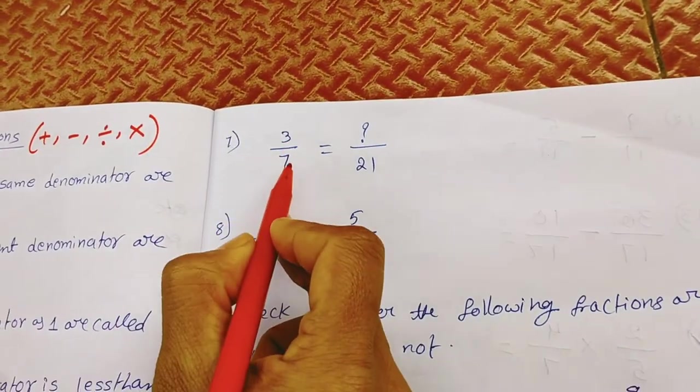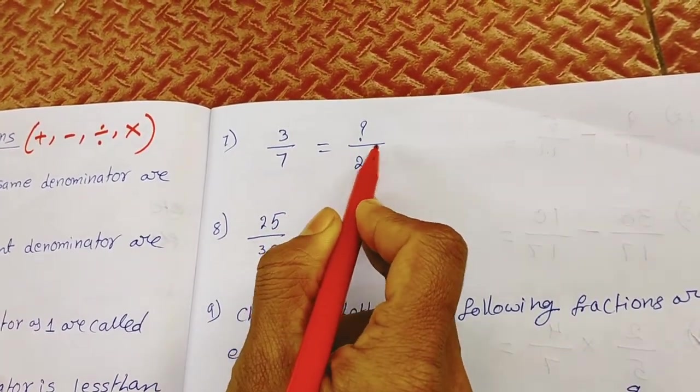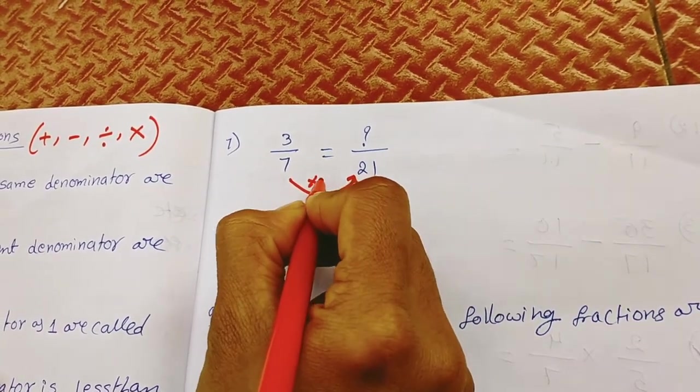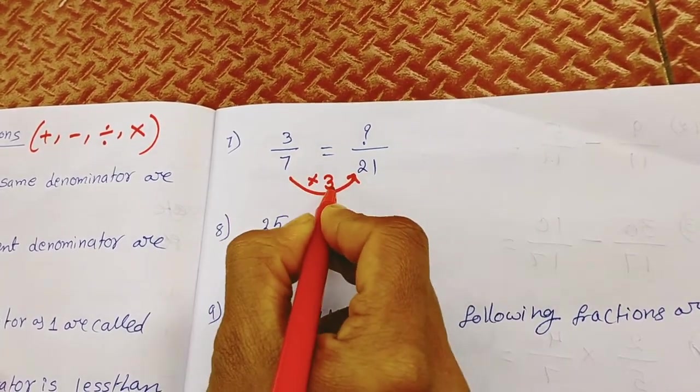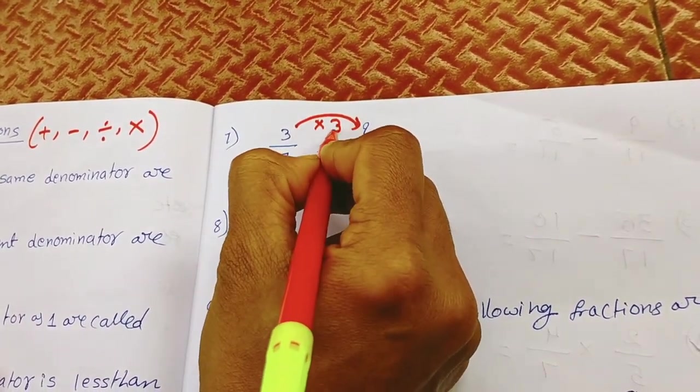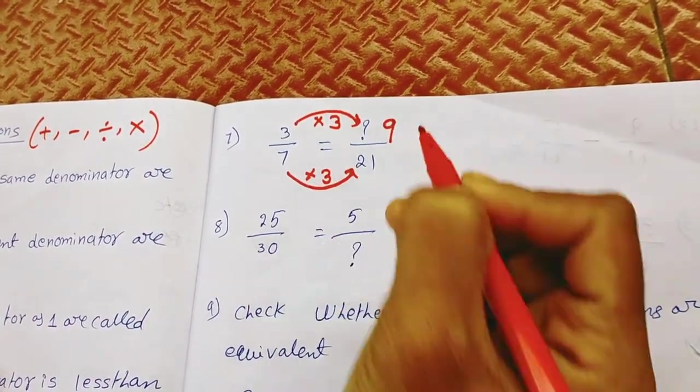Next bit is 3 by 7 equals dash by 21. Here in 7 table it will come in 3 times. 7 times 3 is 21. So like that here also into 3, 3 times 3 is 9 is the answer.